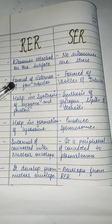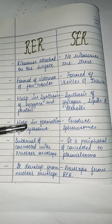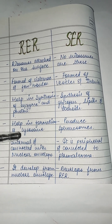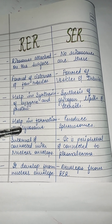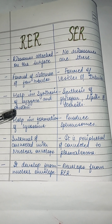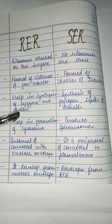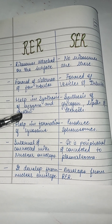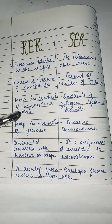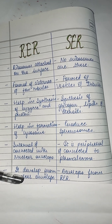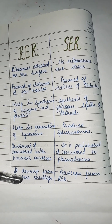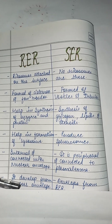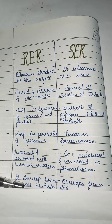The rough one is internal and connected with the nuclear envelope, whereas the smooth is peripheral and connected to the plasmalemma. The rough endoplasmic reticulum is developed from the nuclear envelope, whereas the smooth endoplasmic reticulum is developed from the rough one only.